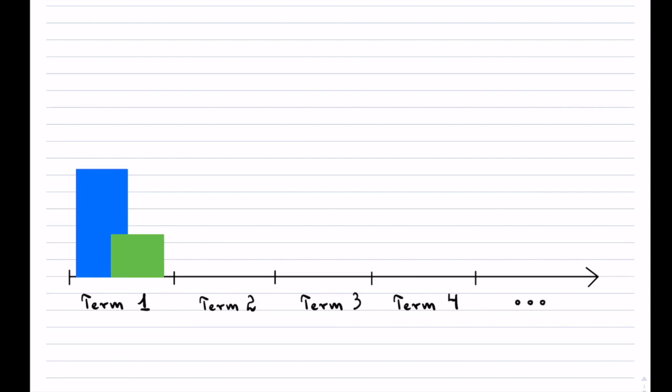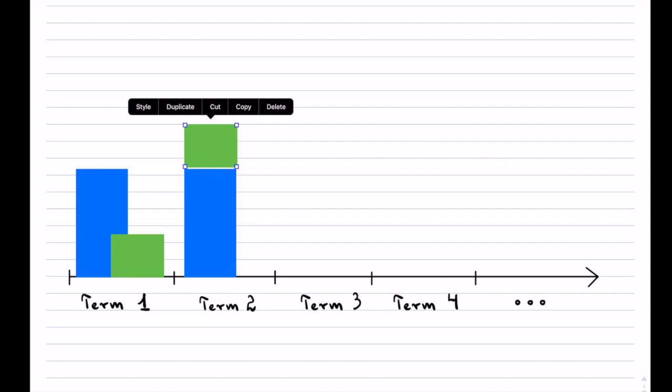Now, at the end of that particular term, if you finished, what you would have is you would basically have the composition of your actual principal plus your interest, which would be added in on top of your original. So now, as you can see, for your second term, you obviously are starting with a little bit more.